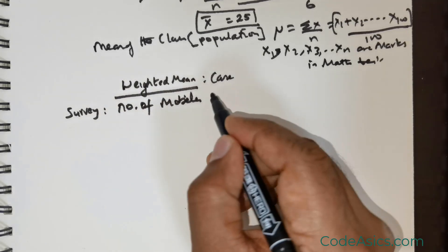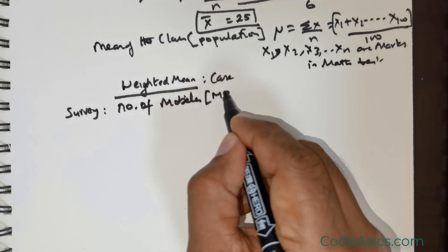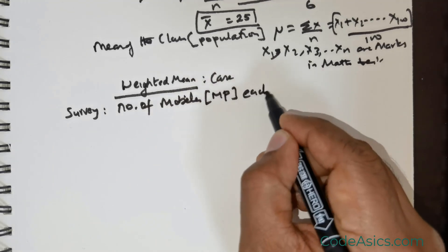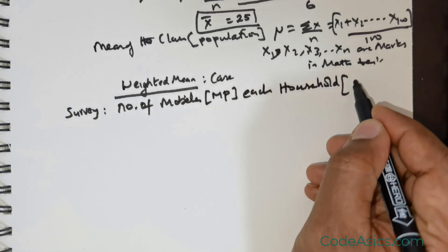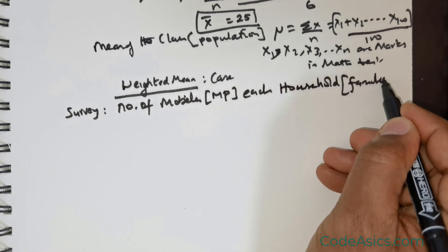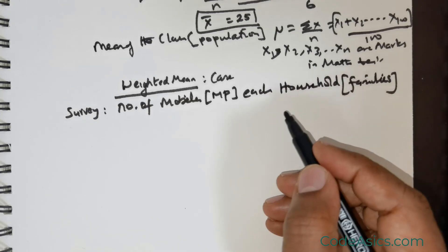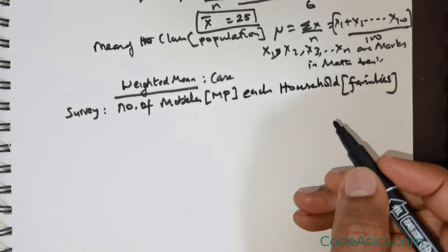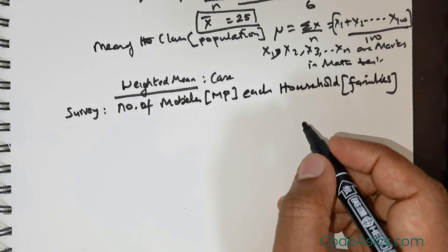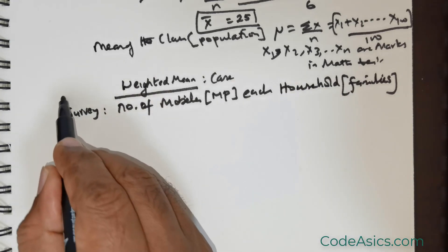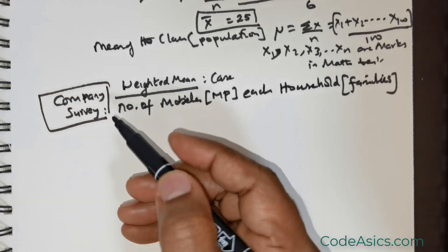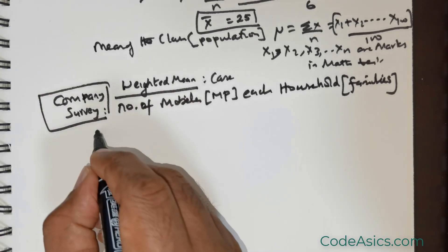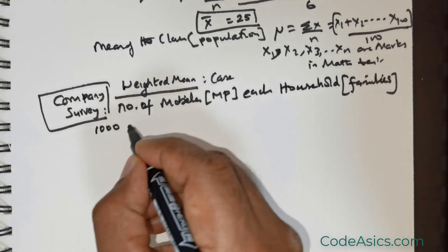When I say mobiles, it means mobile phones that each household has. When I say household, I'm talking about families - the number of mobile phones that each family has with them. This particular company performing the survey is conducting this exercise across 1,000 families.